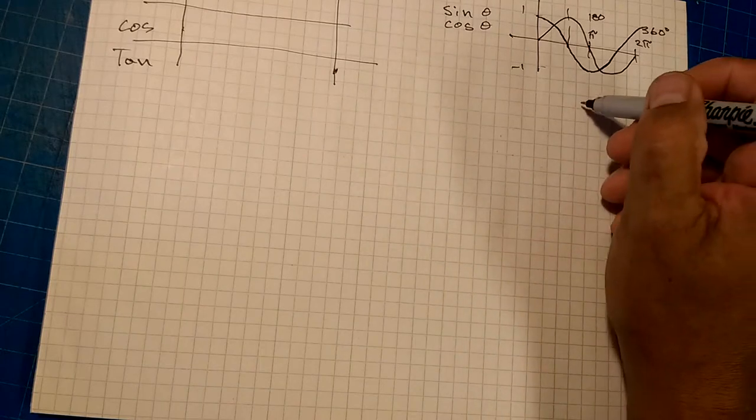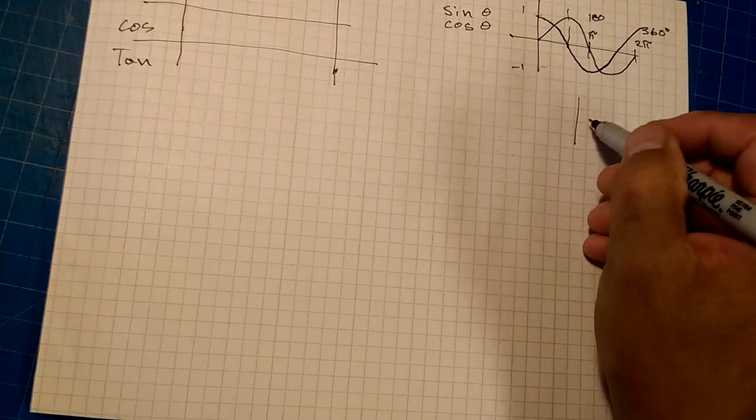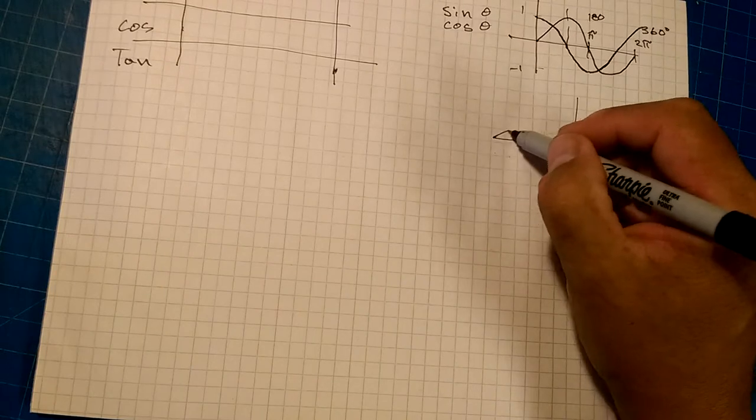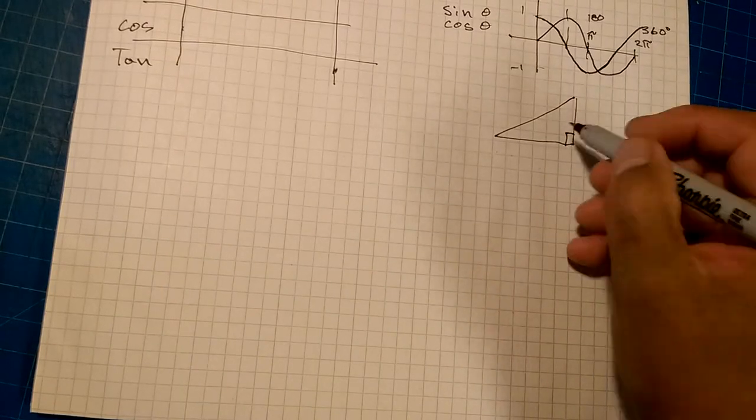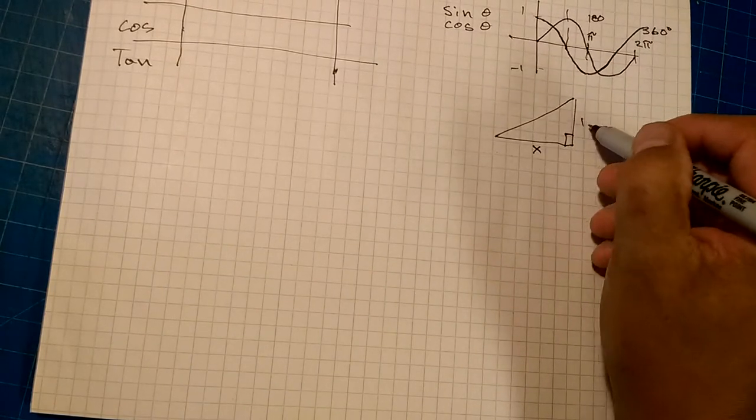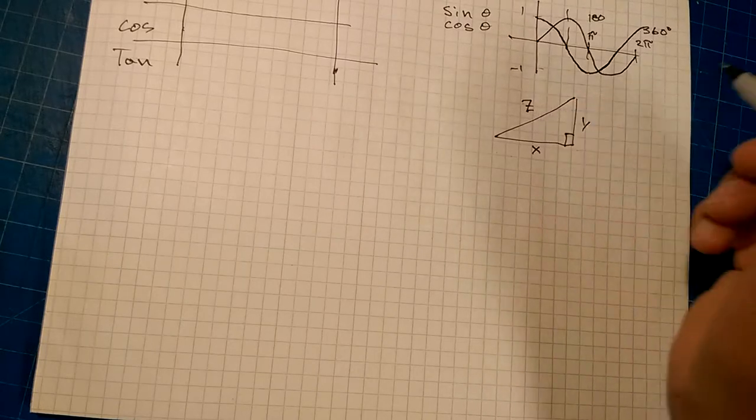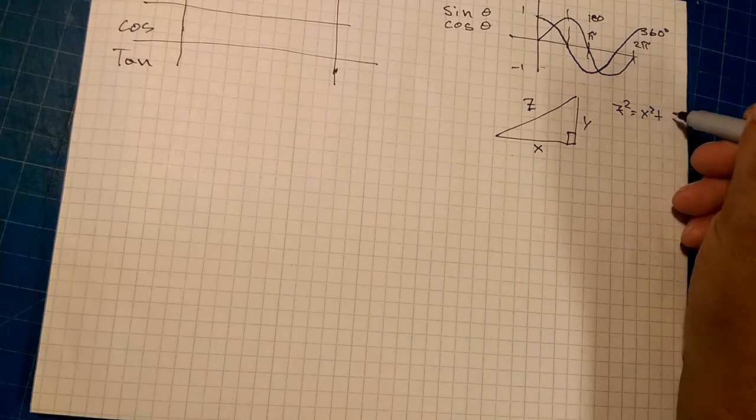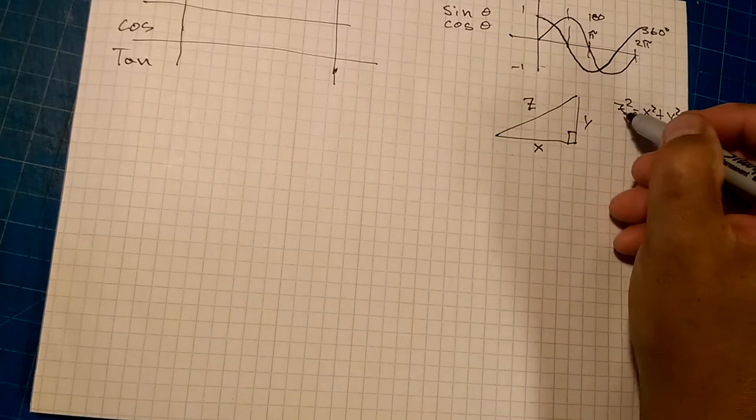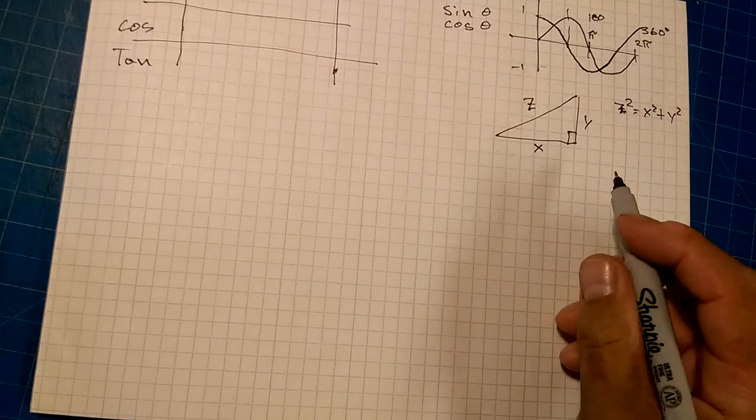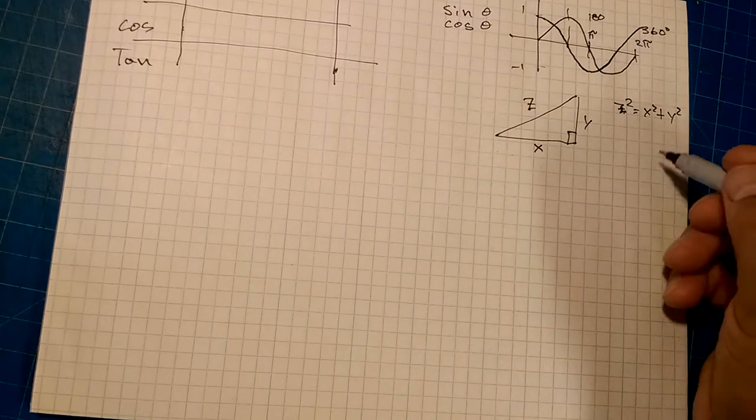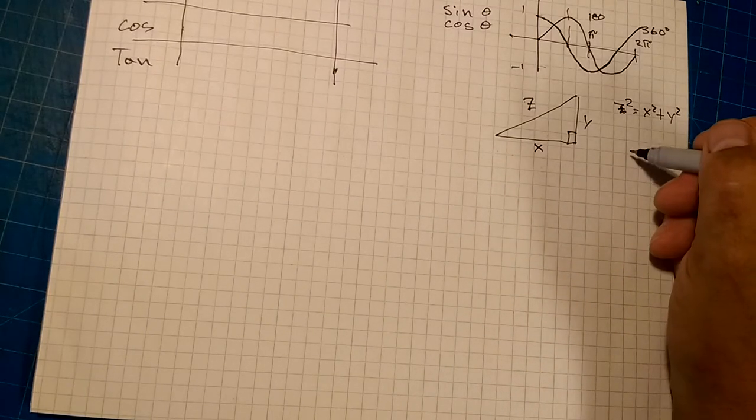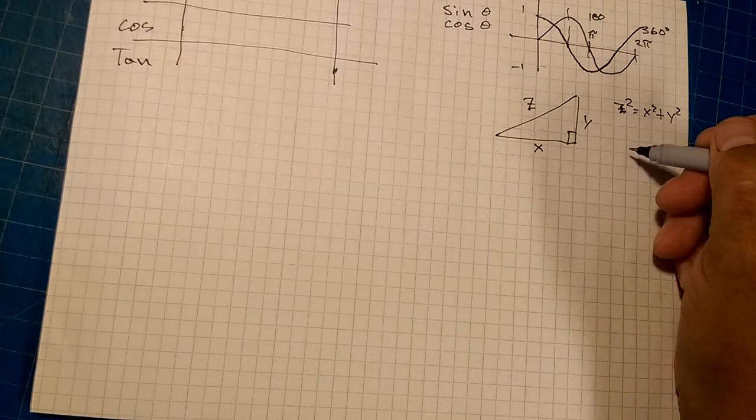And then I also know a few things about right-angled triangles. Well, one thing in particular, z squared is equal to x squared plus y squared, good old Pythagoras taught us that one. And then there's a couple of other things that come into play for figuring these things out.